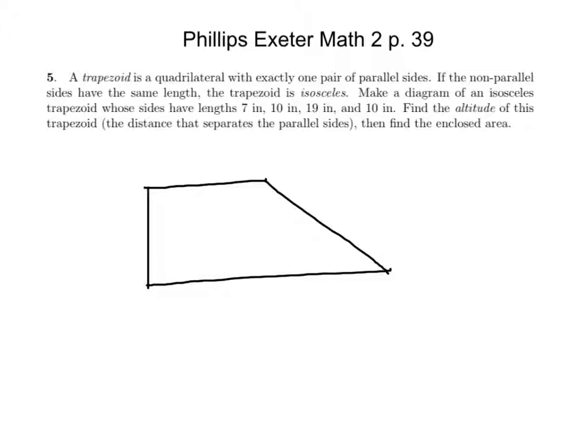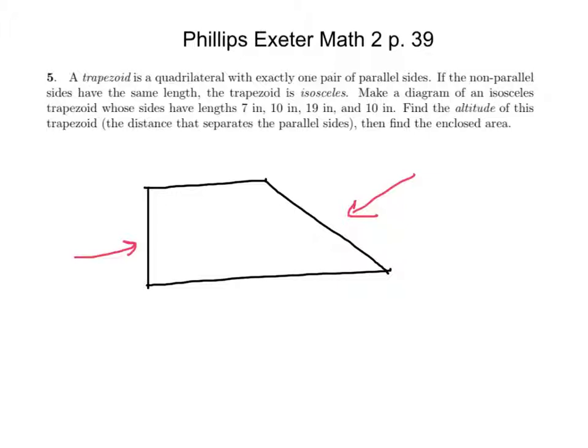Now that is not the typical trapezoid you're used to seeing. What it's saying here is that the non-parallel sides, obviously these non-parallel sides right here, those do not have the same length. But if you have the non-parallel sides do have the same length, then it's isosceles. And that's the typical trapezoid we are used to seeing.